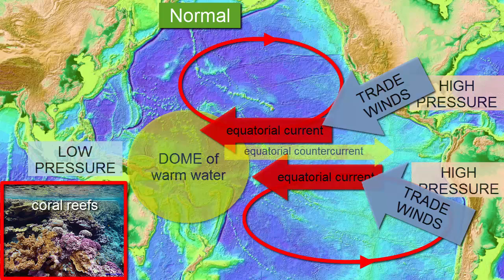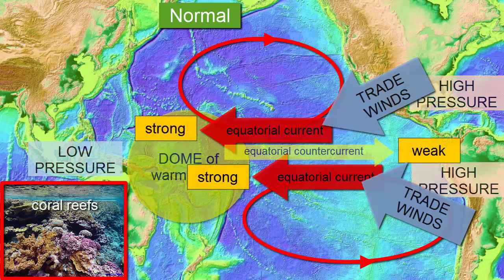Some water slides back eastward and creates a small trickle of warm water called an equatorial countercurrent that runs between the main northern and southern gyre equatorial currents. Under normal circumstances, this countercurrent is weak and small in comparison to the equatorial currents.